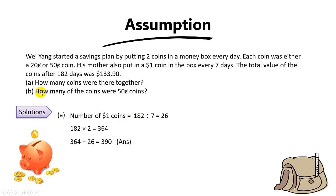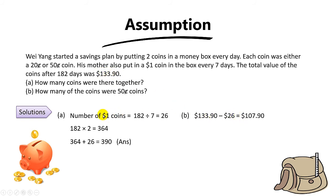For part B, how many of the coins were 50 cent coins? We need to use the assumption method, because the question gives us a total value of all the coins but we do not know how many are 20 cents and how many are 50 cents. Before we assume, let's use the total amount and minus away the one-dollar coins first, since we know there are 26 one-dollar coins. So take $133.90 minus $26, and you get $107.90.